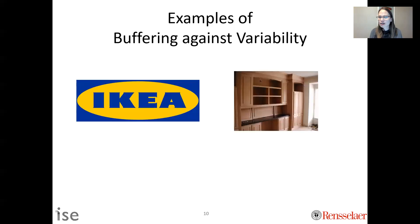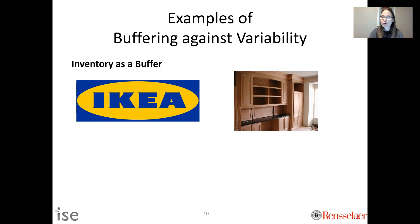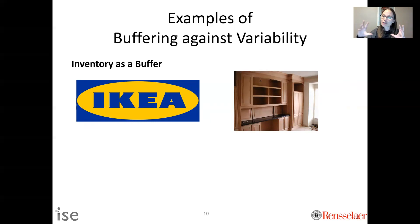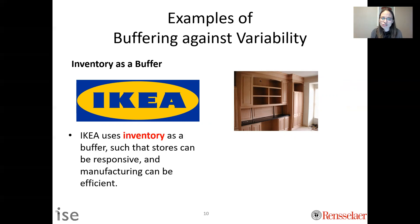Let me explain different business models in the furniture industry using different ways to buffer against variability. Ikea typically uses inventory as a buffer. If you've been to an Ikea store, they have a ton of inventory — almost like a warehouse. This allows their manufacturing production to be really flat and efficient, because they place the buffer of inventory downstream.